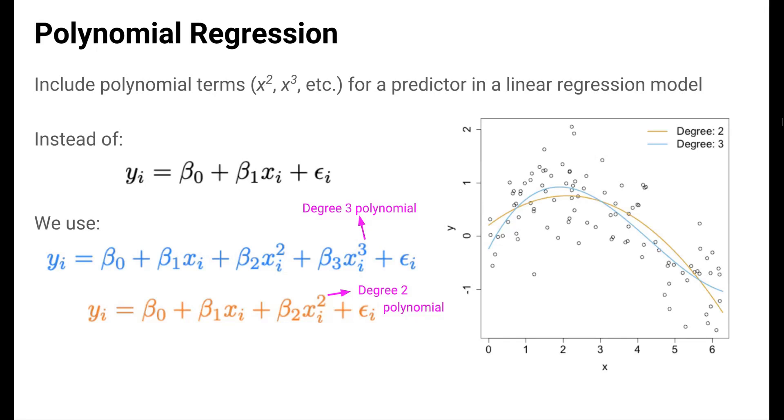The plot on the right here shows the trend predicted by models with up to a degree 2 polynomial in orange and up to a degree 3 polynomial term in blue. The trends are slightly different, but both capture the non-linear trend better than a simple linear regression model at the top. This would just model a straight line.